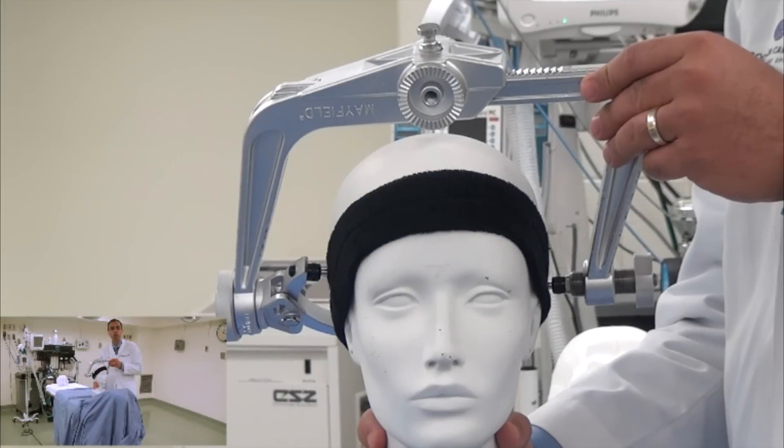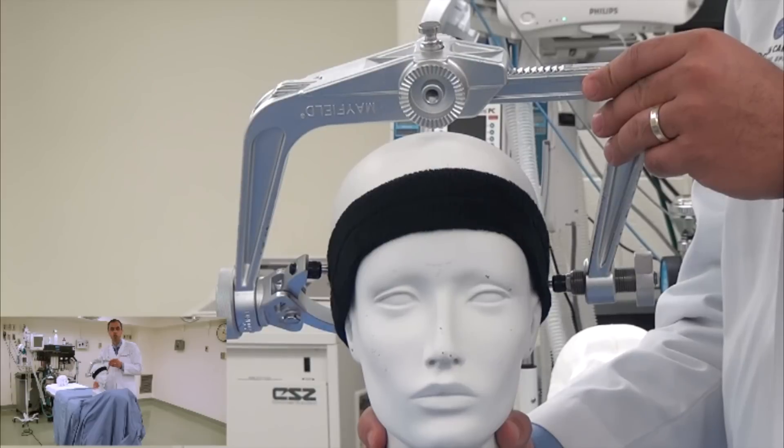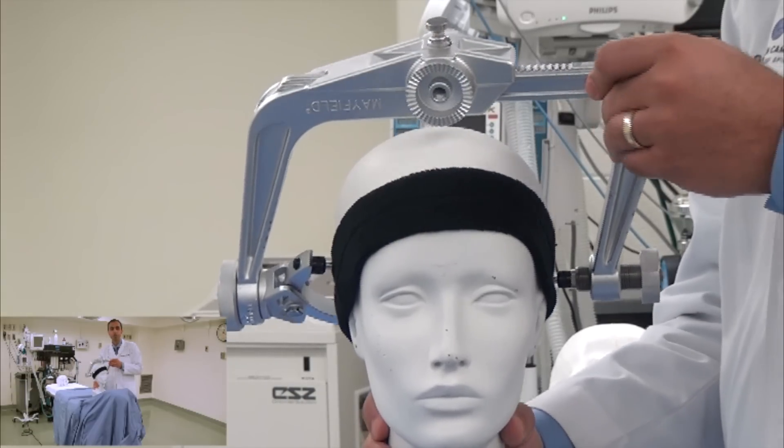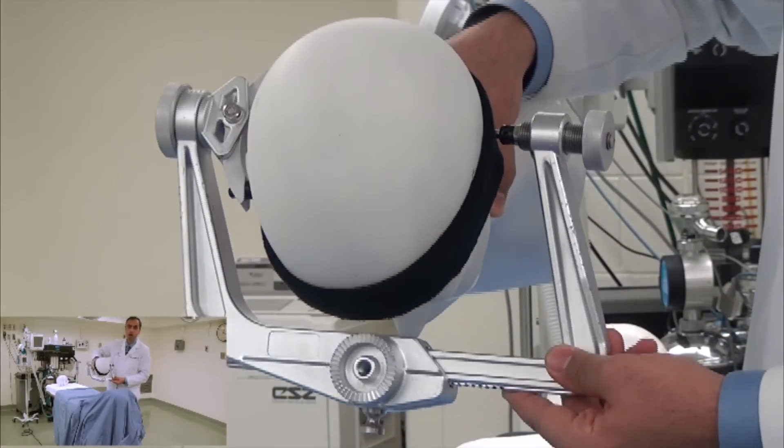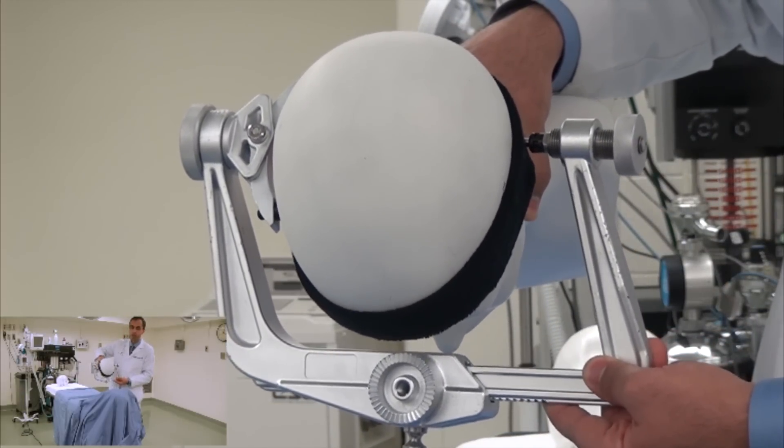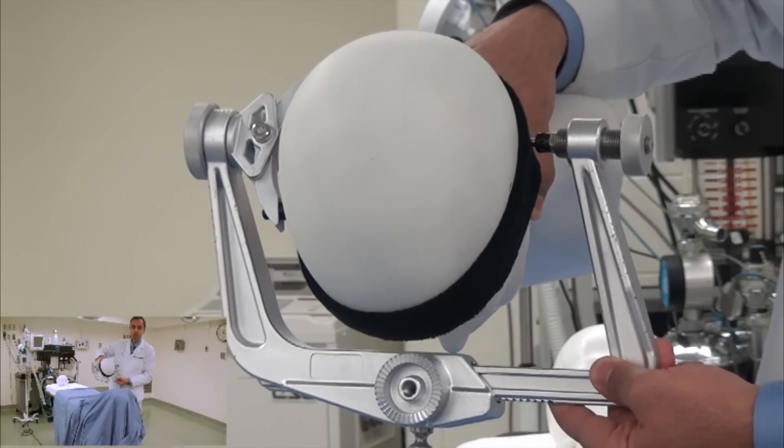One of the common ways to displace the Mayfield skull clamp during spinal procedures is when the patient is placed prone on the operating table, most commonly for a posterior cervical procedure.